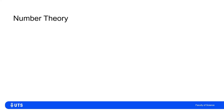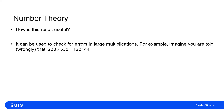An obvious question at this point is: why is this study of remainders useful? One way we can use it is to check for errors in large multiplications without having to perform the difficult multiplication. Suppose somebody claims that 238 multiplied by 538 equals 128,144 — that is not actually true, but how can we establish that using the properties of remainders?